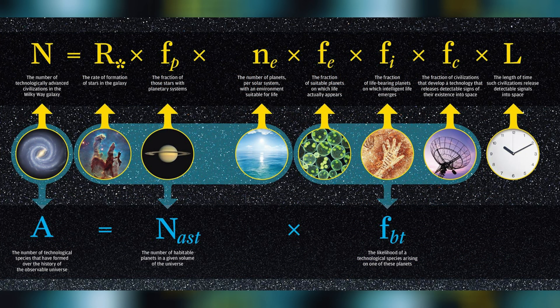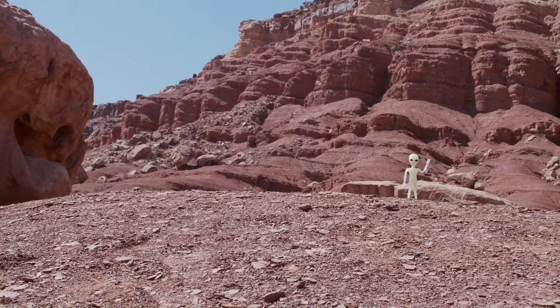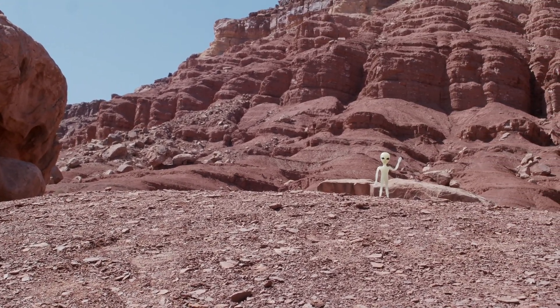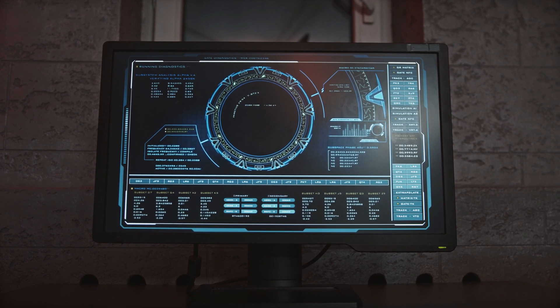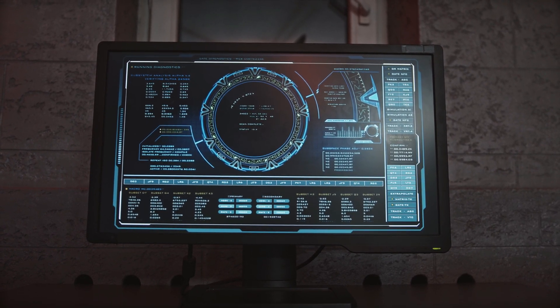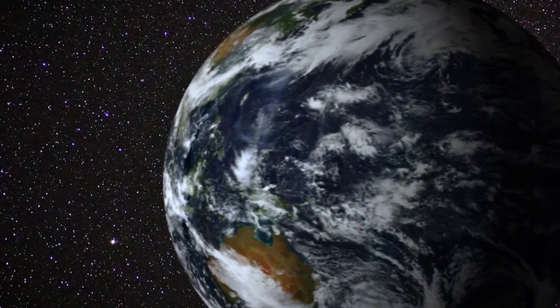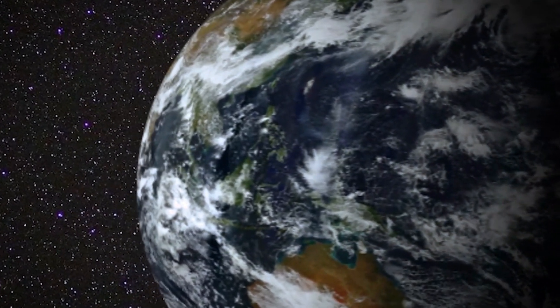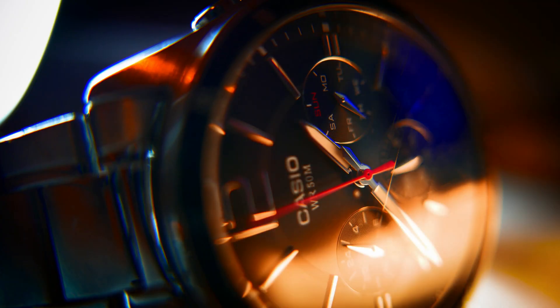While some may argue that we are simply one among trillions of planets in our vast universe, others believe there must be other intelligent beings out there somewhere. While we continue to search for signs of extraterrestrial intelligence through programs like SETI, Search for Extraterrestrial Intelligence, concrete evidence still eludes us. So what does this mean? Are we truly alone in our cosmic neighborhood? Or have we simply not yet discovered or understood all the complexities at play? Only time will tell.